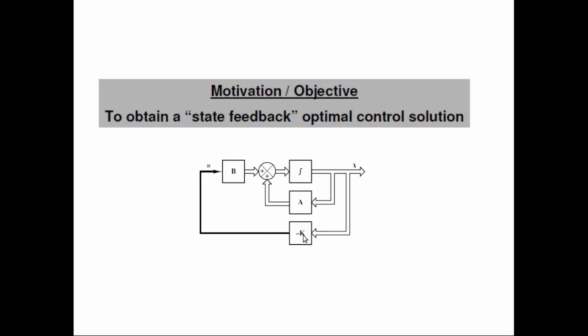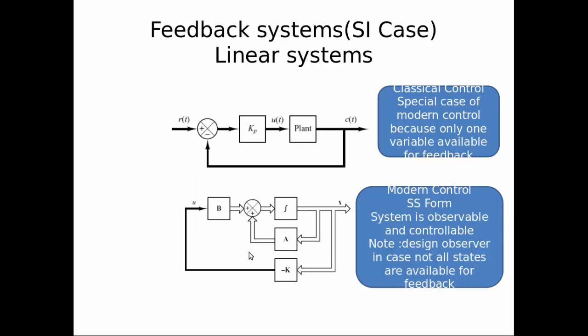Now we need to use the Hamilton-Jacobi-Bellman equation to find a nonlinear combination from x to K — for example, x squared times some gain — a nonlinear combination, not limited to linear systems.